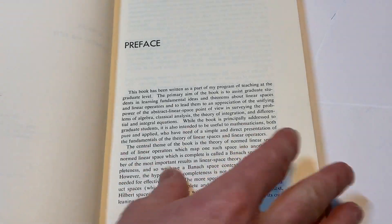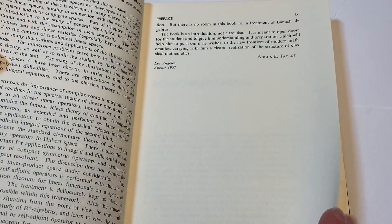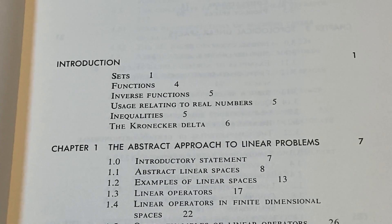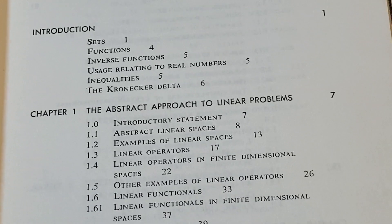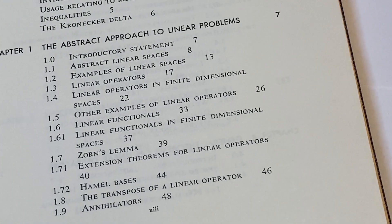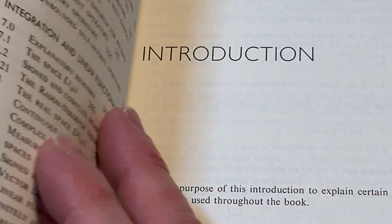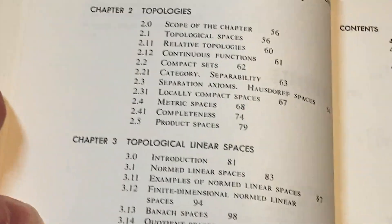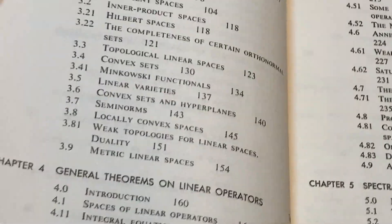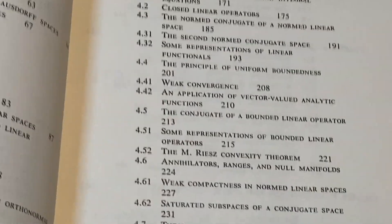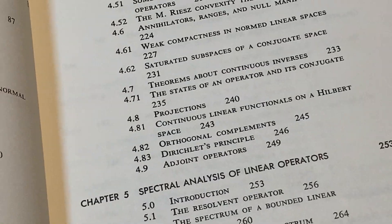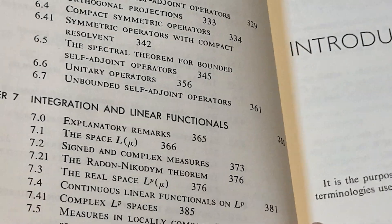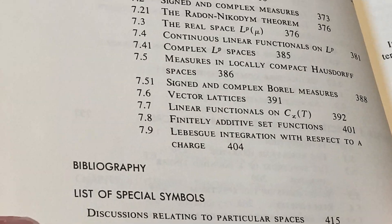Let's take a look further in the book and look at the contents. So, Acknowledgements, and here are the contents: Sets, The Abstract Approach to Linear Problems, Topologies, Topological Linear Spaces, General Theorems on Linear Operators, Spectral Analysis of Linear Operators, Spectral Analysis in Hilbert Space, Integration and Linear Functionals, and then a Bibliography.